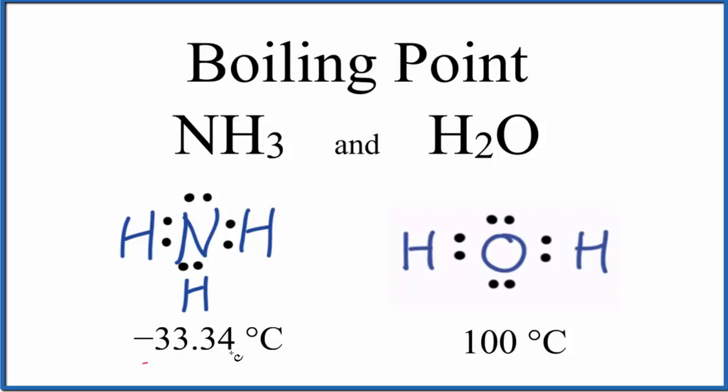Ammonia boils at negative 33.34 degrees Celsius, so this is a fairly low temperature. Water, on the other hand, 100 degrees Celsius. That's its standard pressure for both of these.